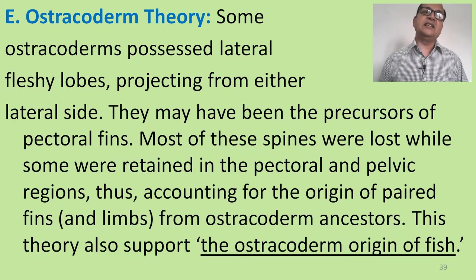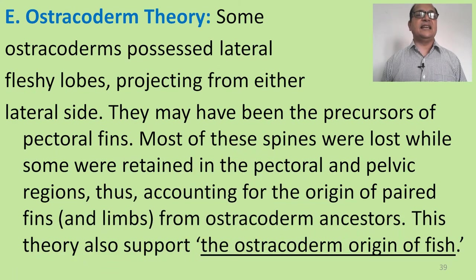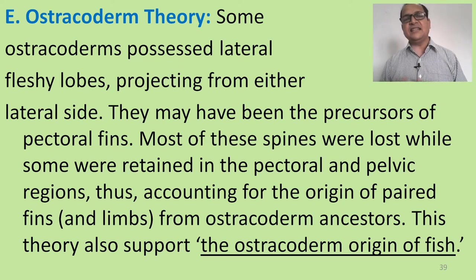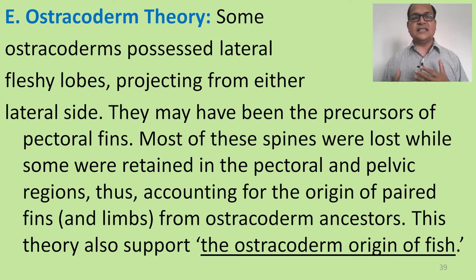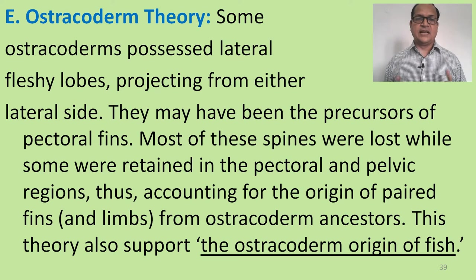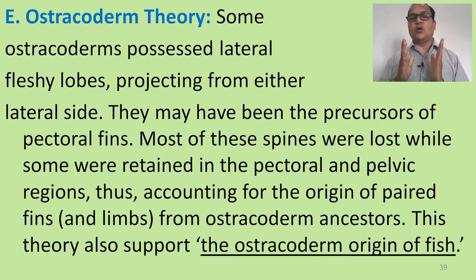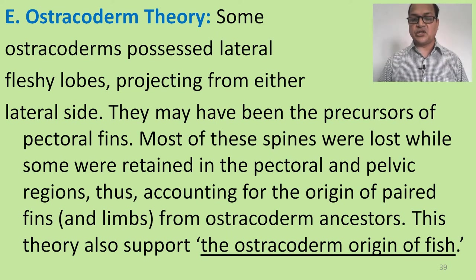The fifth theory is the ostracoderm theory. Some ostracoderms possess lateral fleshy lobes projecting from either side. These may have been the precursors of the pectoral fin. Most of these spines were lost while some were retained in the pectoral and pelvic region. Thus, this accounts for the origin of paired fins or limbs from the ostracoderm ancestor, and this theory also supports the ostracoderm origin of fish fins.